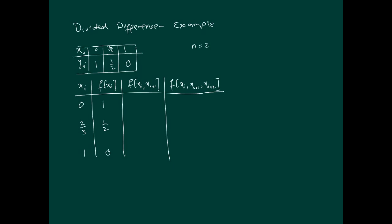Now the way it works is we don't need to remember anything about the formulae if we just follow the procedure. What we do is we take this value here, this is the data point, so we take half minus the previous one, which is 1, divided by 2 over 3 minus 0. So that comes to minus 3 over 4.